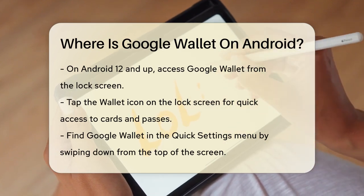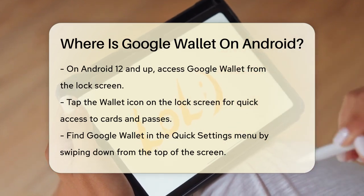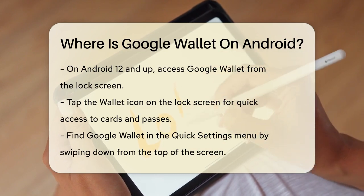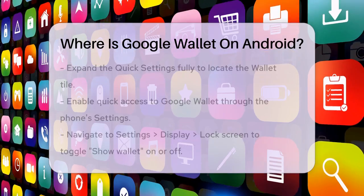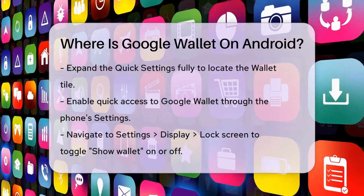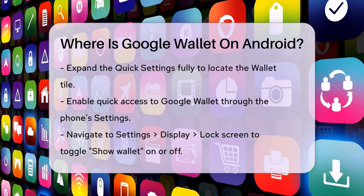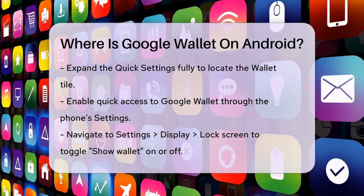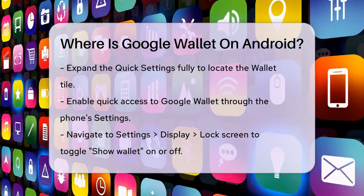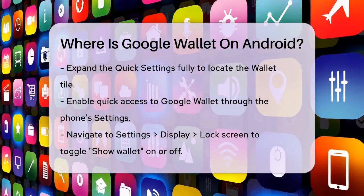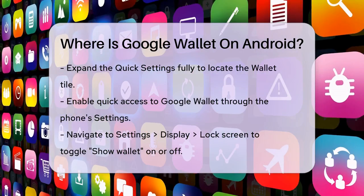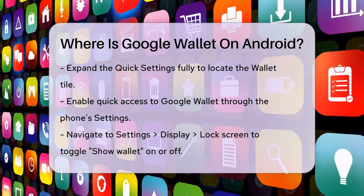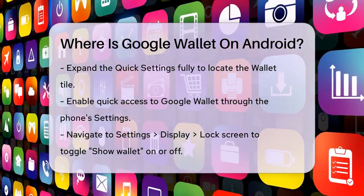You can also find Google Wallet in your Quick Settings menu. To do this, swipe down from the top of your screen to open the Quick Settings, then swipe down again to expand it fully. Look for the Wallet tile and tap on it to access your stored cards and other items.